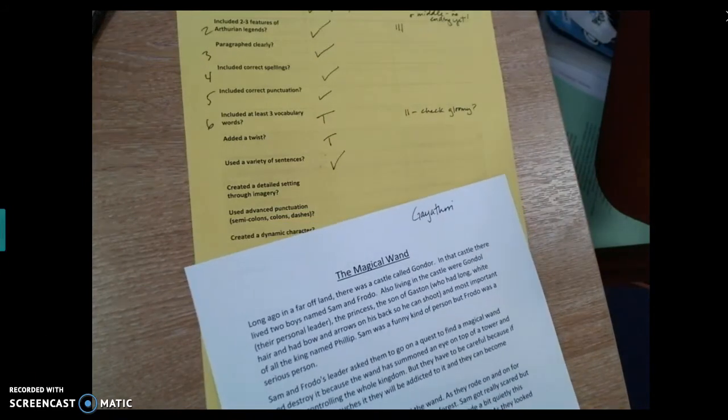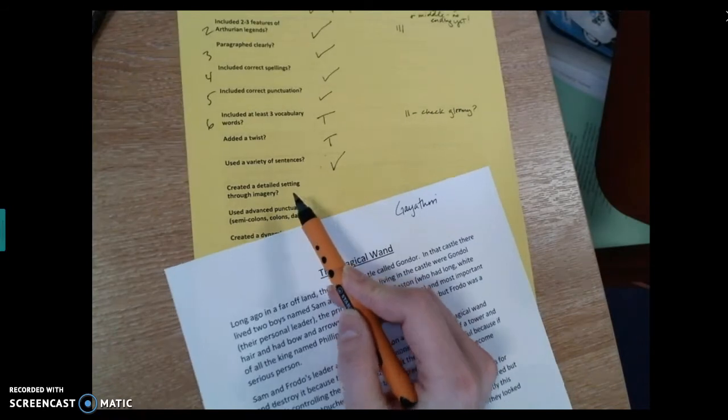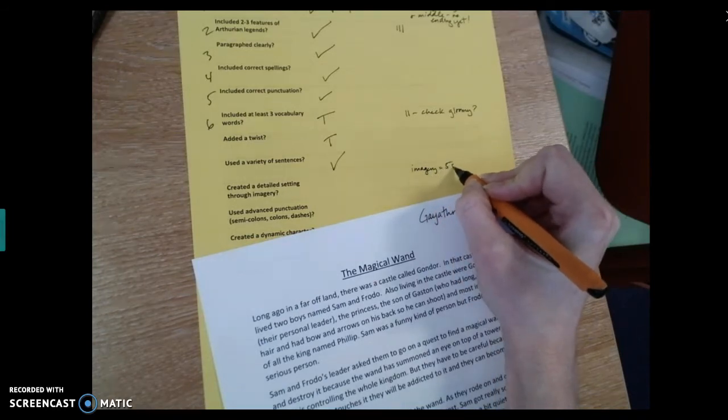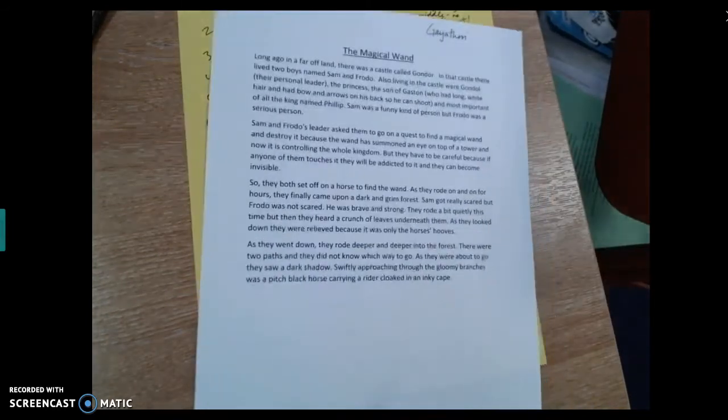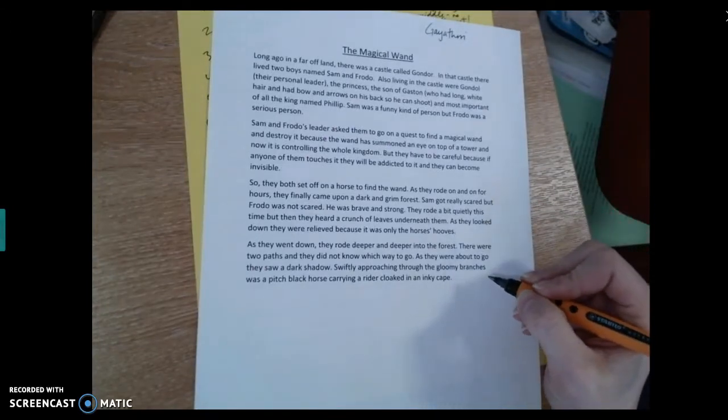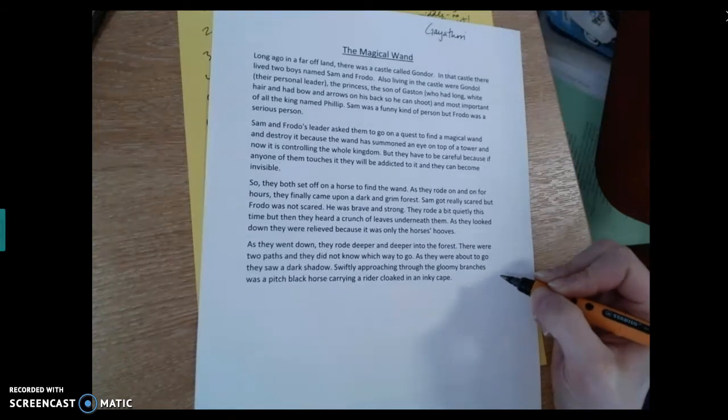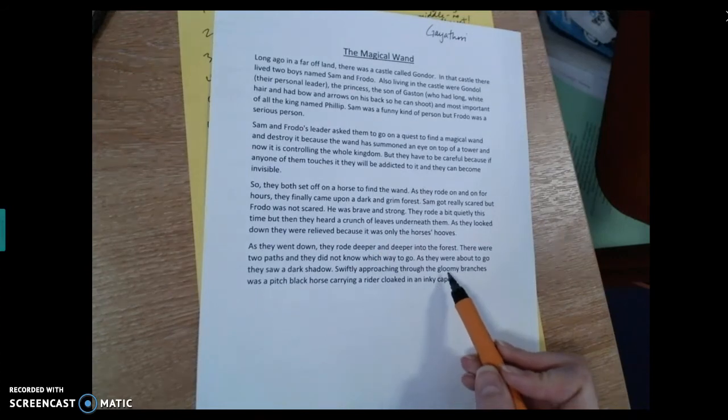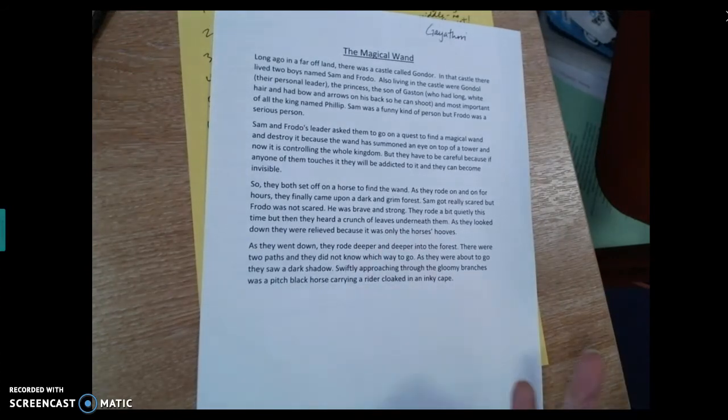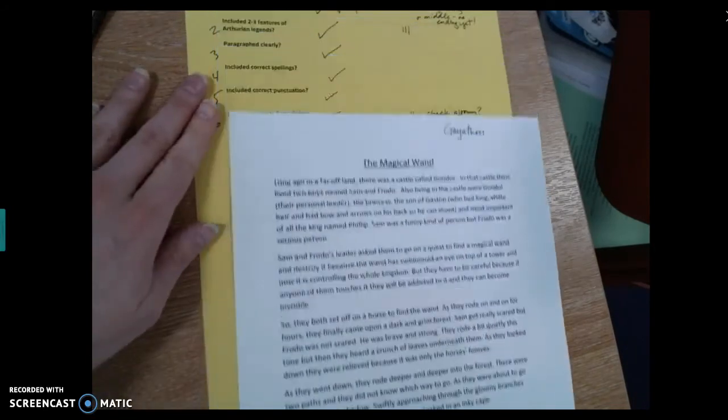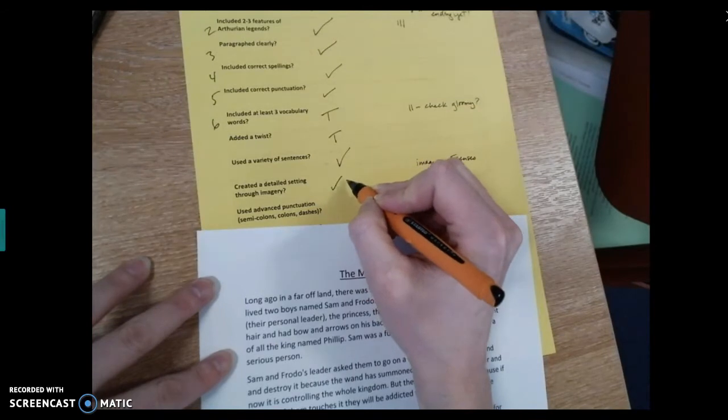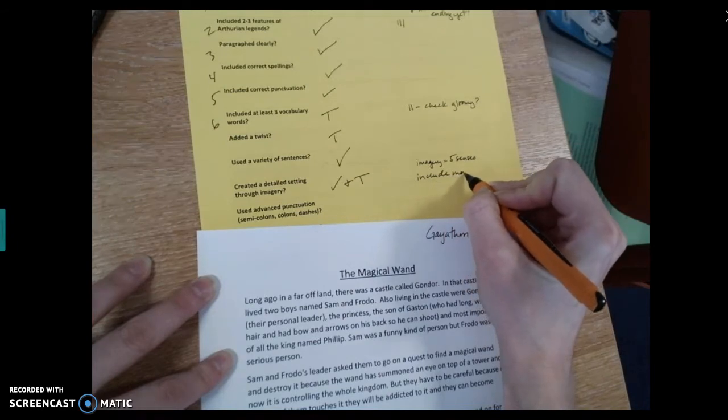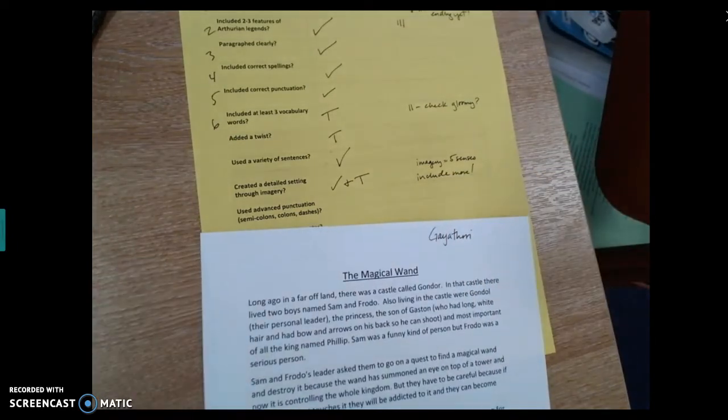So the next thing we're looking at is whether or not she's created a detailed setting through imagery. And I'll just remind you that imagery equals the five senses. Now, definitely as we're getting kind of towards the bottom and they're riding through this forest, I begin to notice some description and some imagery about the setting. This idea of the crunch of leaves has sound. Then we have the description of an inky cape and gloomy branches and a dark shadow. That's kind of vision, right, or sight. But I think she could work on that a little bit more. So I'm going to give a tick and a target. Include more is going to be my comment. I wouldn't mind hearing something about like the sound or something along those lines.